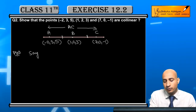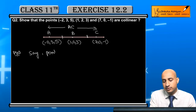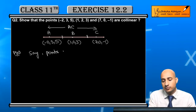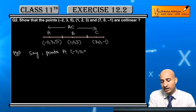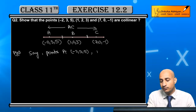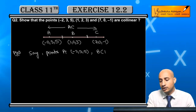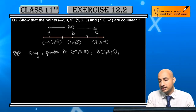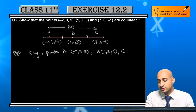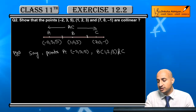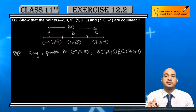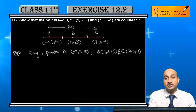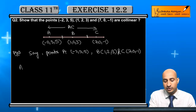तो इन points की naming कर देता हूँ: point A is minus 2 comma 3 comma 5, B is 1 comma 2 comma 3, and C is 7 comma 0 comma minus 2.